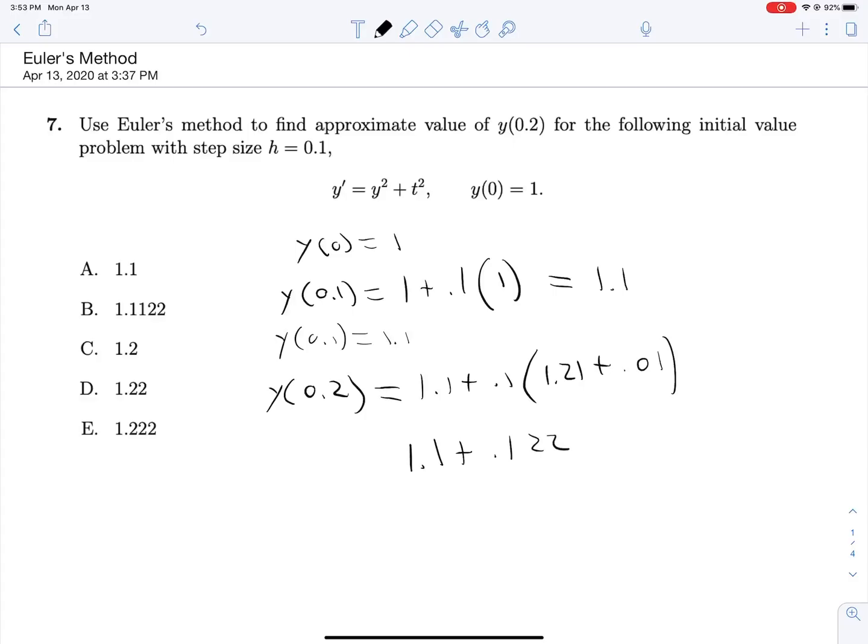This is 1.1 plus 0.1 times 1.22, so 0.122, and we add that up, and y of 0.2 is equal to 1.222.